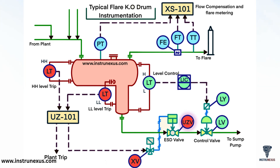Altogether, this system provides automatic level control, continuous pressure monitoring, and safety interlocks, ensuring that the flare operates safely and efficiently. By tracing each tag — LT, LIC, LV, UZV, and XS101 — you can easily understand how measurement, control, and shutdown functions integrate within the flare system.